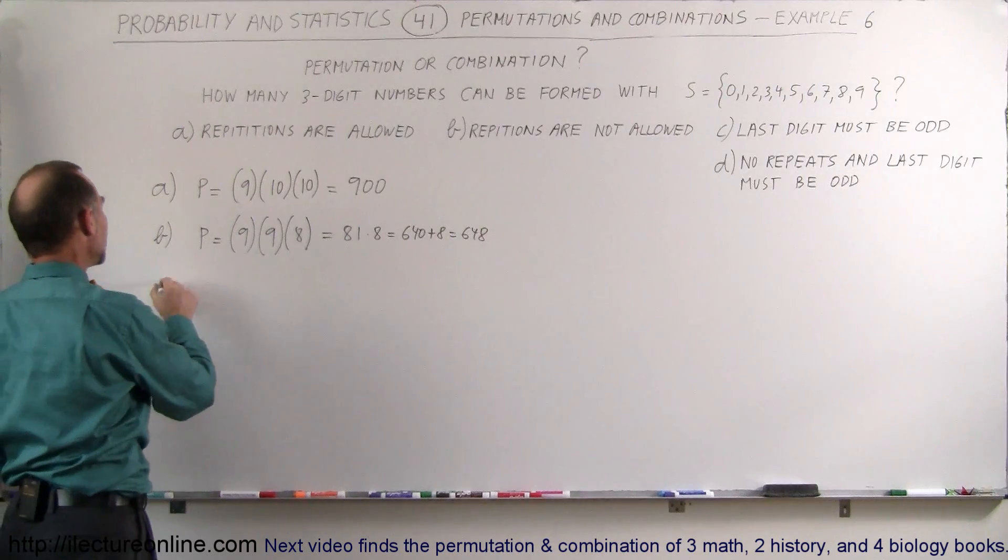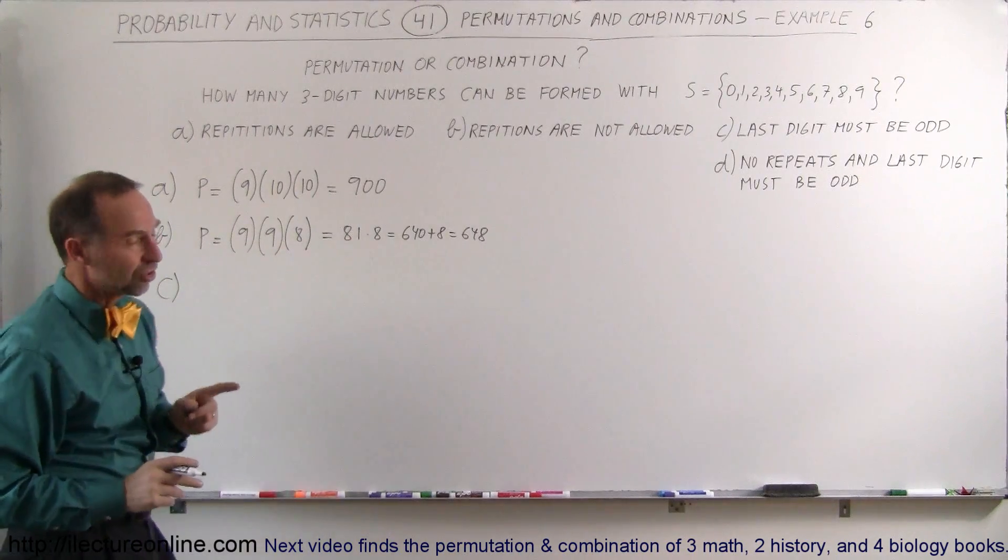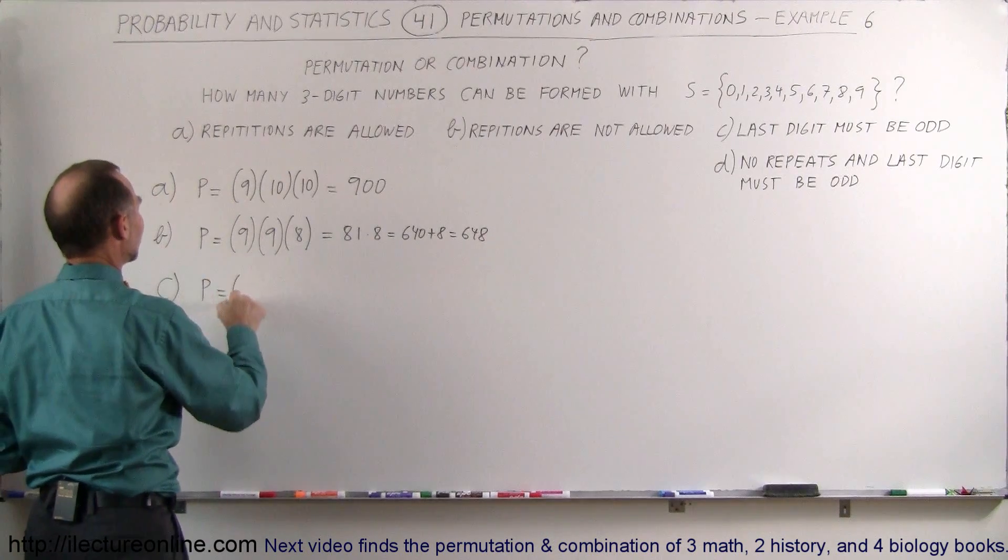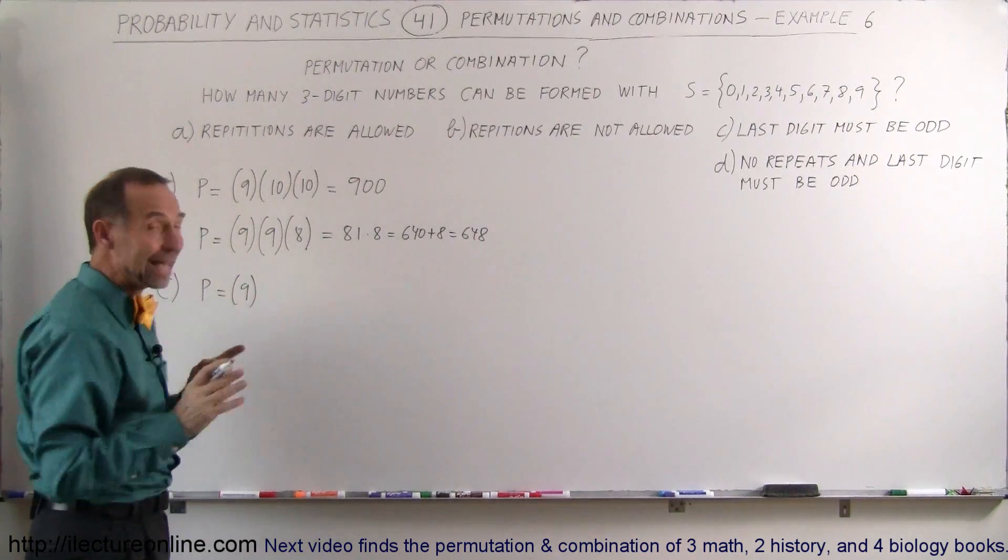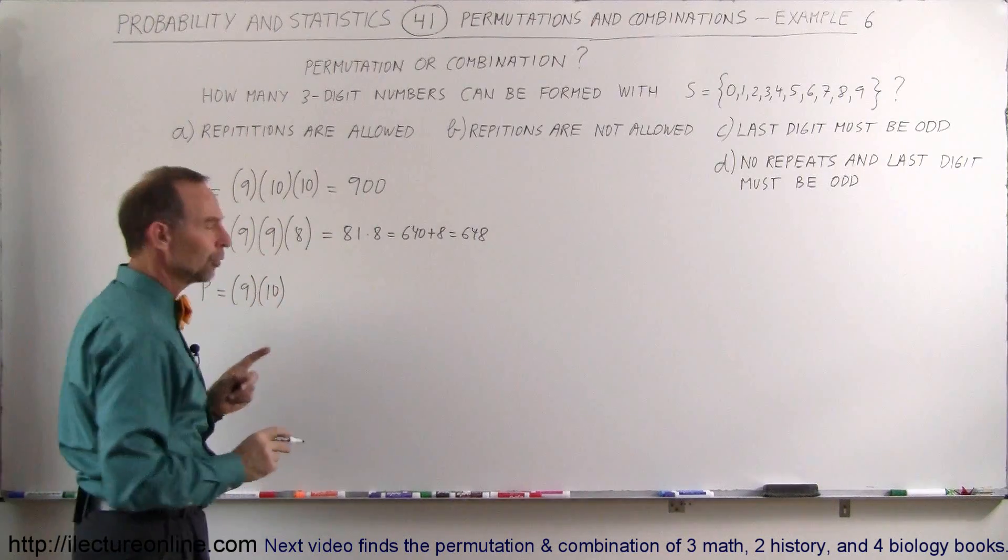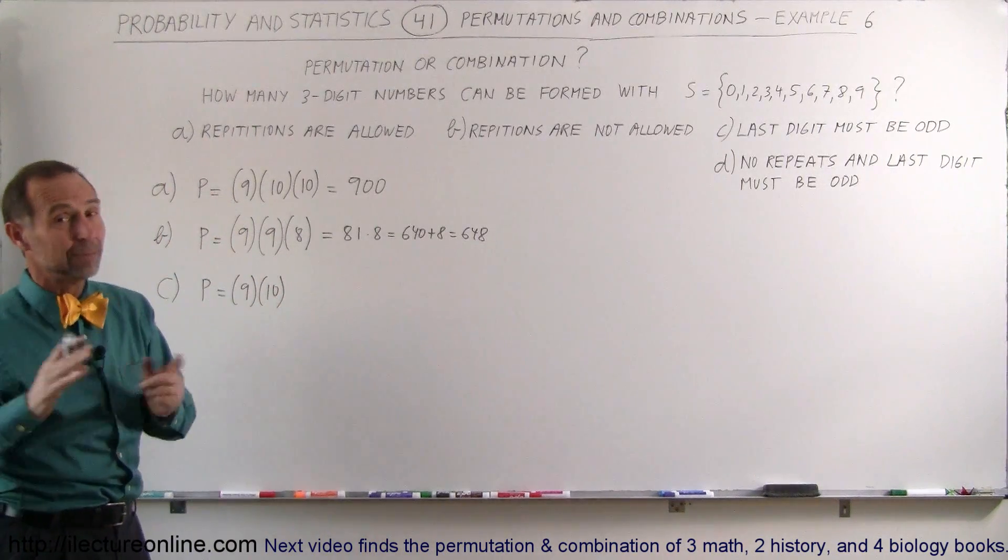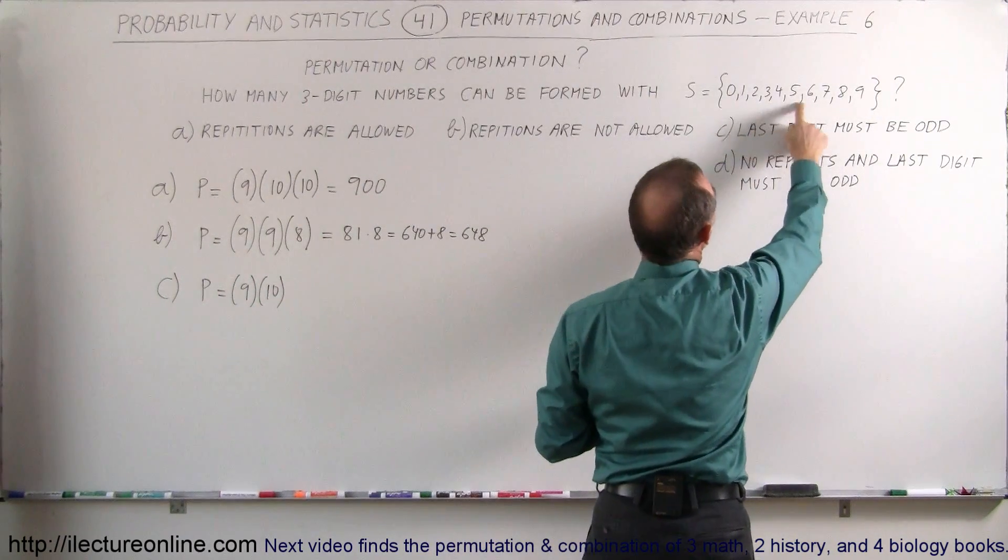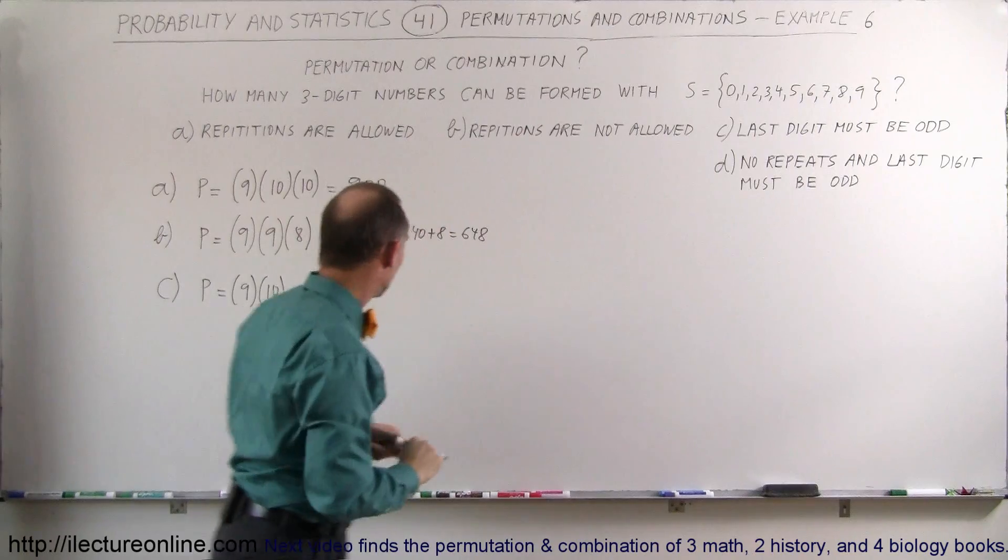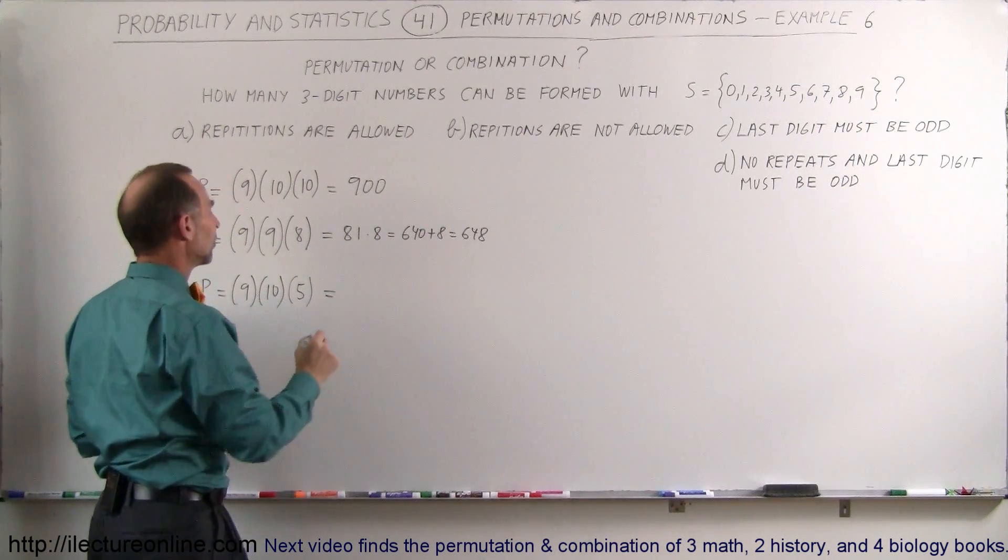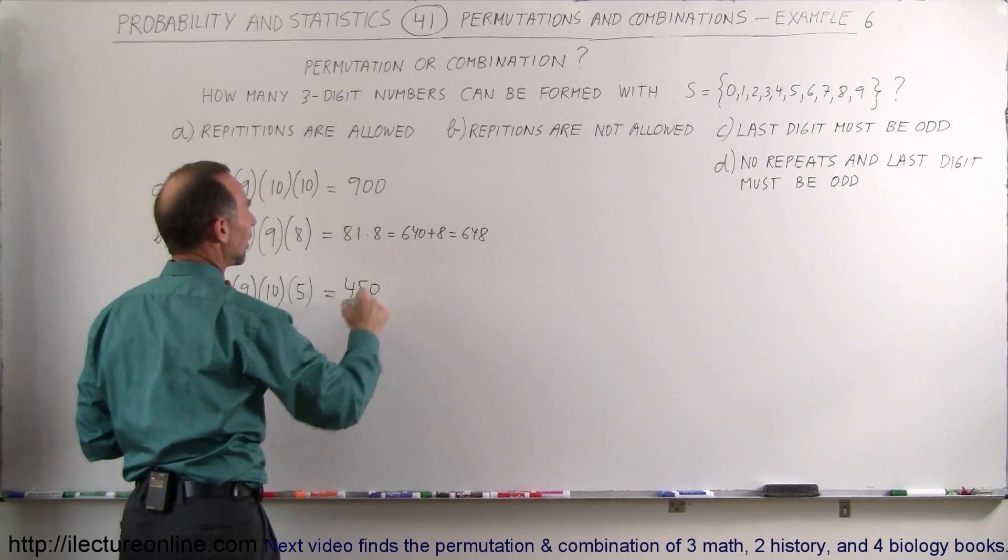On part C, the only restriction is that the last number must be odd. Alright, so the permutation, the number of permutations is 9 for the first digit. You can repeat, which means you have 10 possibilities for the second digit, but for the third digit it must be odd. It can be repeated, but it must be odd, and we have 1, 2, 3, 4, 5 odds. So there's only 5 possibilities for the third digit. That's 50 times 9 or 450 possibilities.